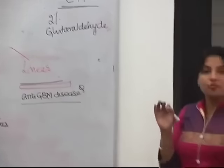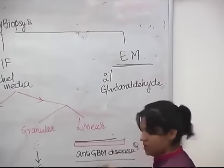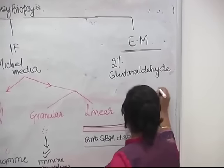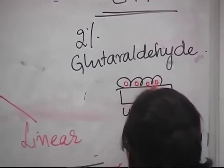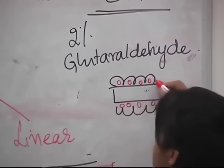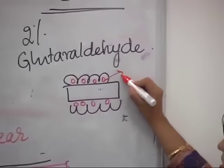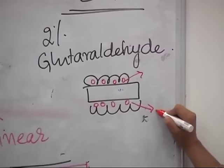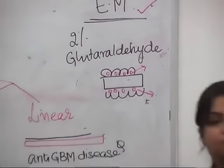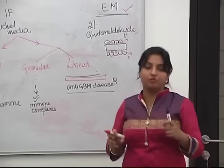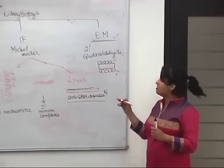The third investigation is electron microscopy. What does electron microscopy tell us? As I've shown you, this is the basement membrane, endothelium, and these are the epithelial cells. Sub-endothelial or sub-epithelial deposits — how will you know that? That is seen on electron microscopy. Electron microscopy helps you pick up the site of deposit, where the deposits are actually present.